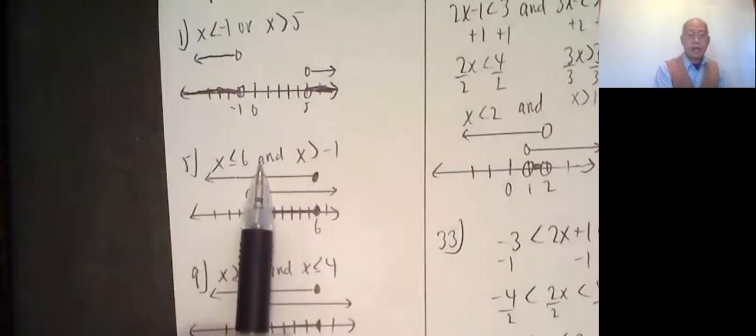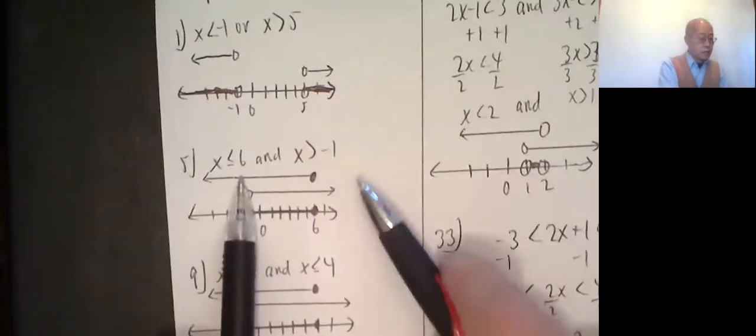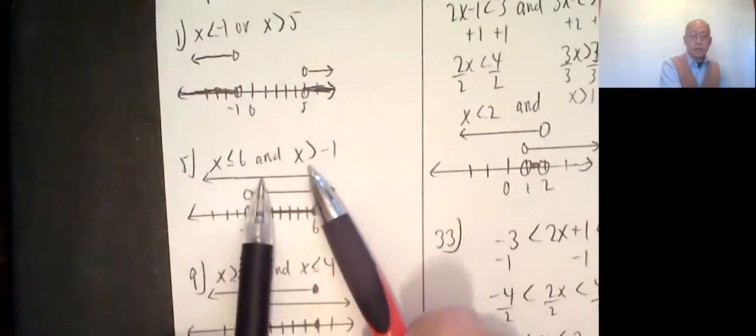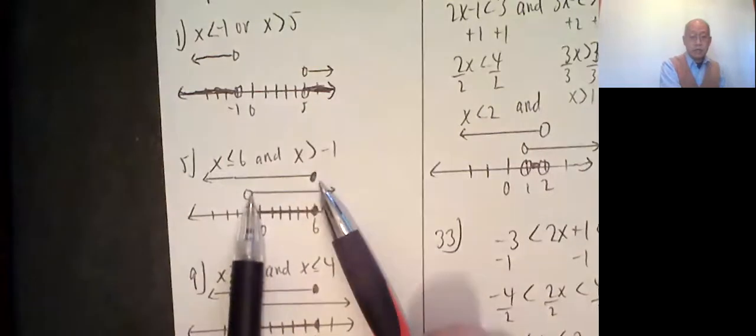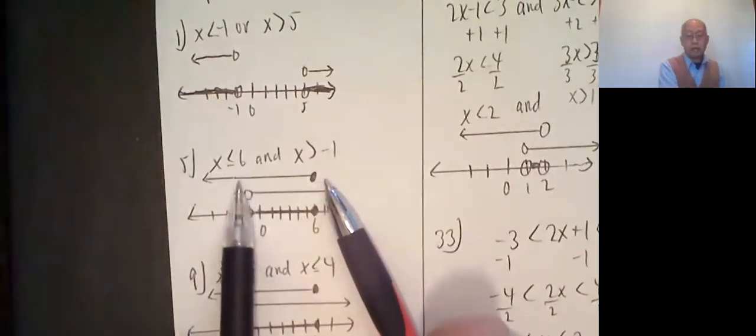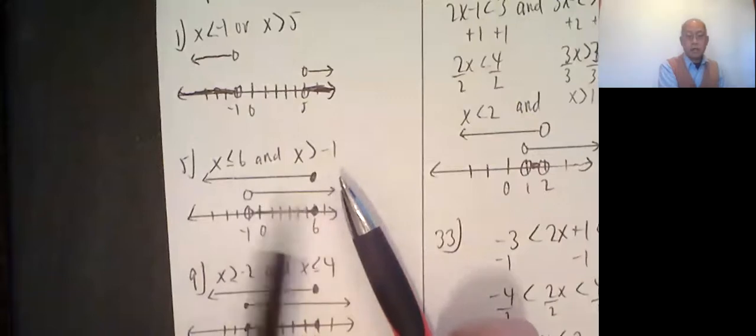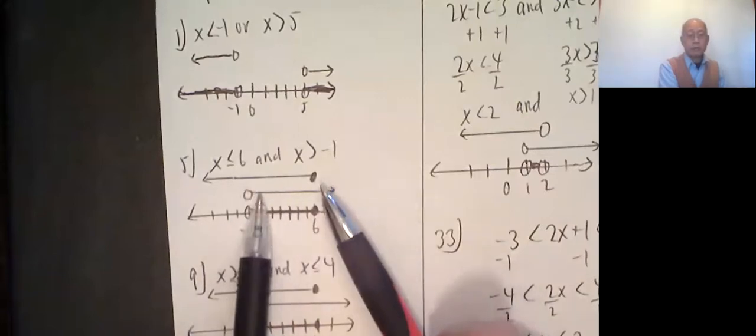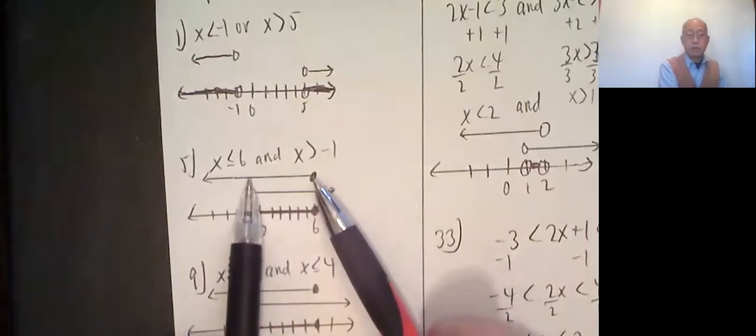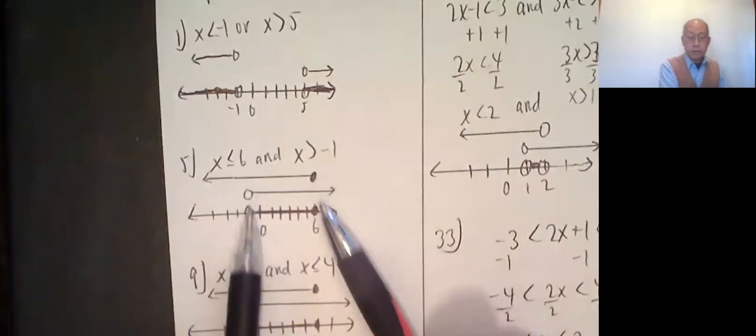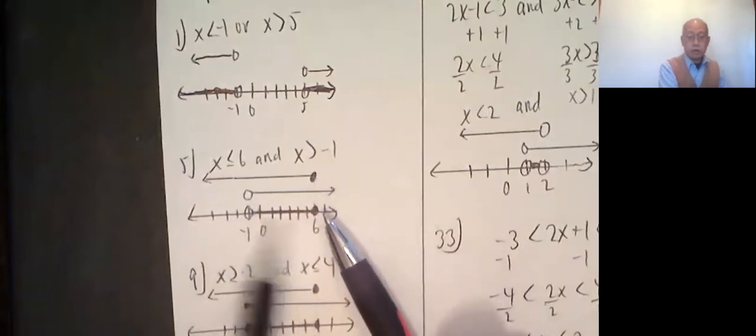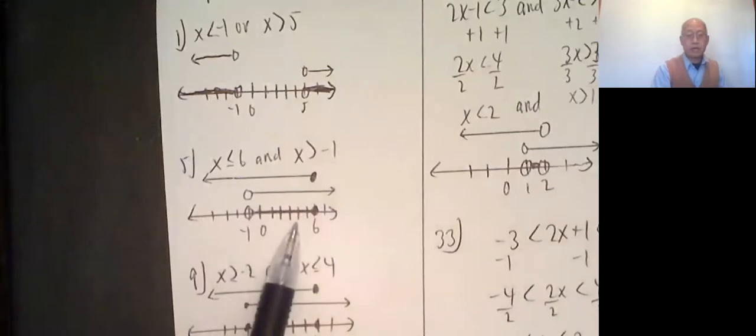Now, if the connecting word is and, it has to be in both sets. So it would be this region here, which is twice shaded. It's as if to say, if I had two different colors, it would be the twice colored region. So I only bring this region down. Open circle, closed circle, everything between negative 1 and 6.